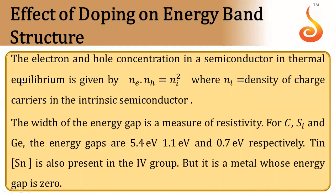The electron and hole concentration in a semiconductor in thermal equilibrium is given by n_e into n_h equals n_i square, where n_e is electron density, n_h is density of holes, and n_i is density of charge carriers in intrinsic semiconductors.